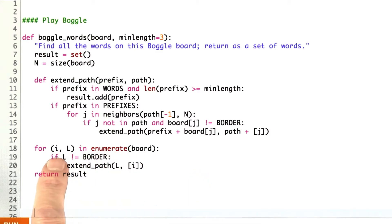So here I said we can enumerate over the locations and the letters that are in the board. If the letter is not a border character, then we want to extend the path starting with that letter and that location.